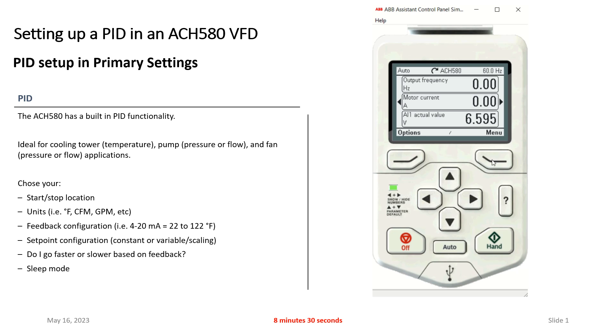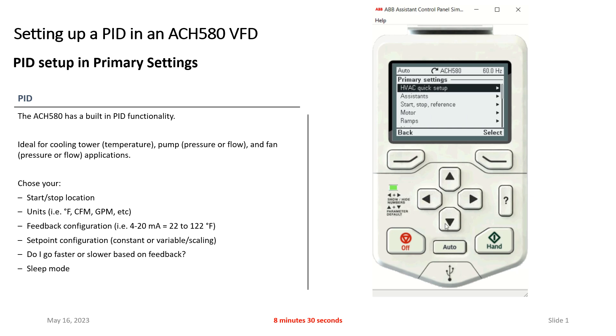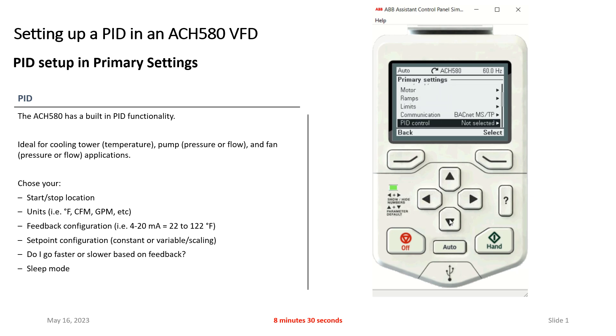So what I'm going to do is go into the menu, go into primary settings, hit select, scroll down to PID.